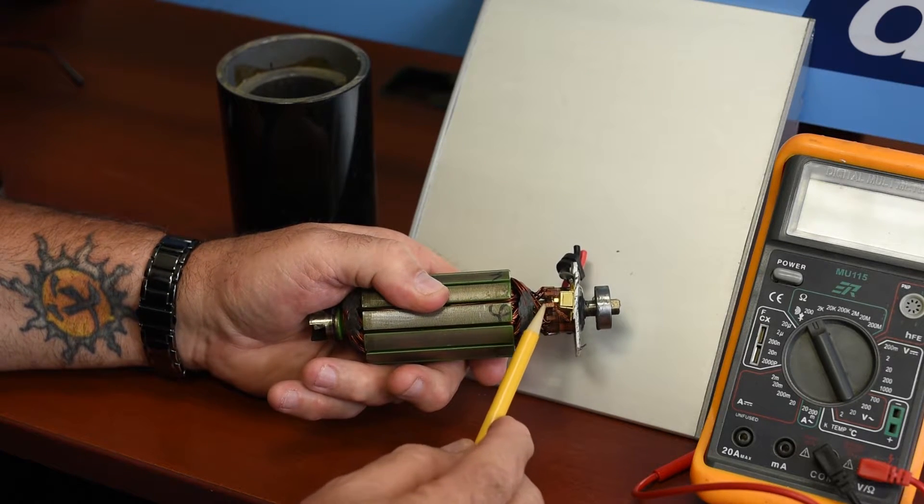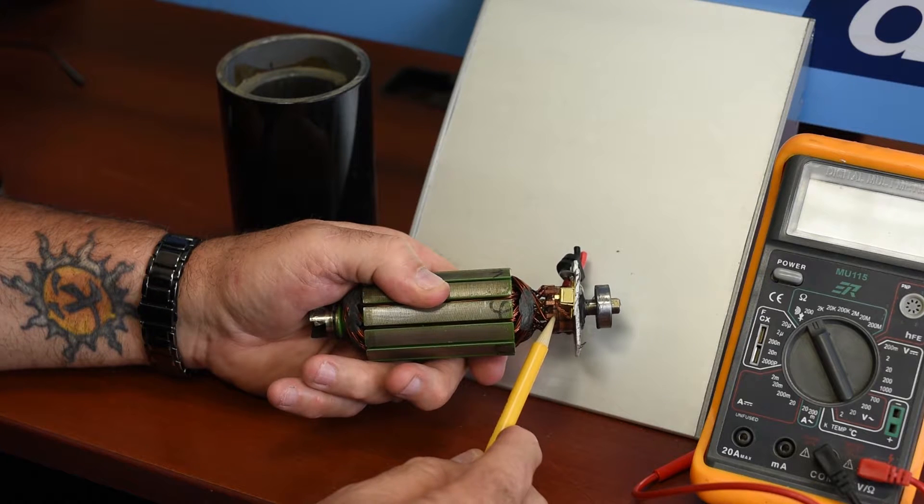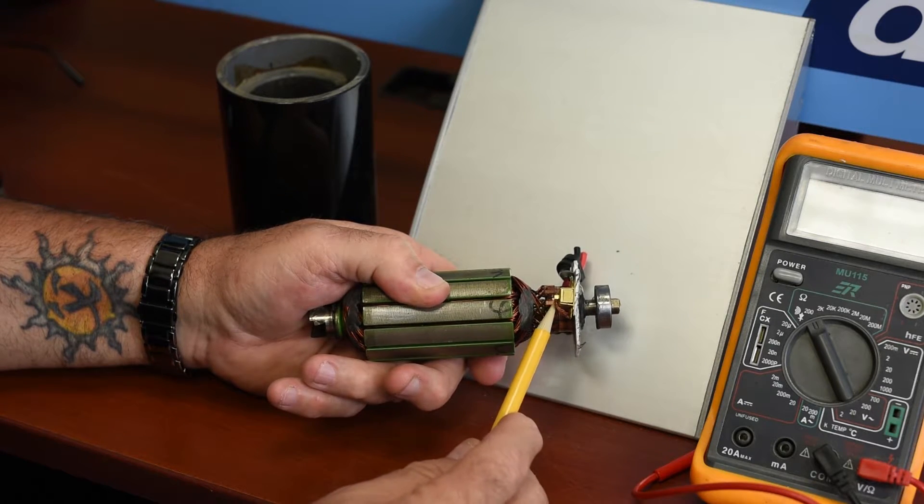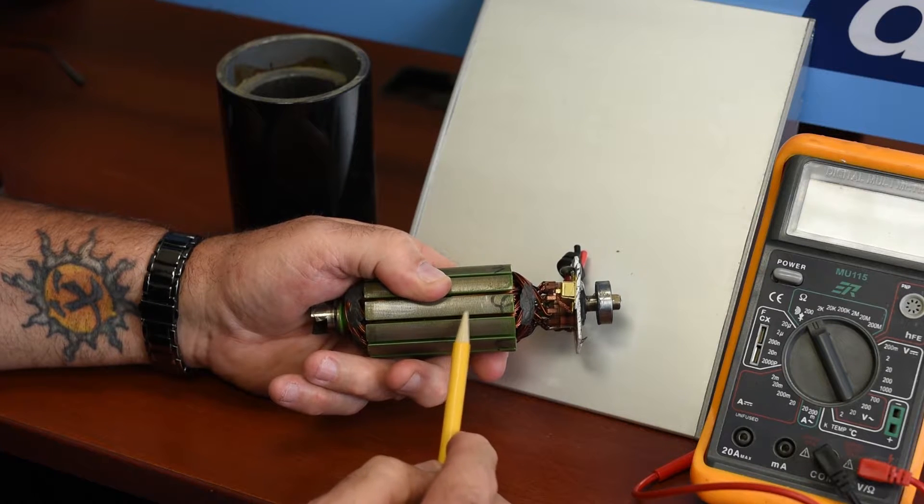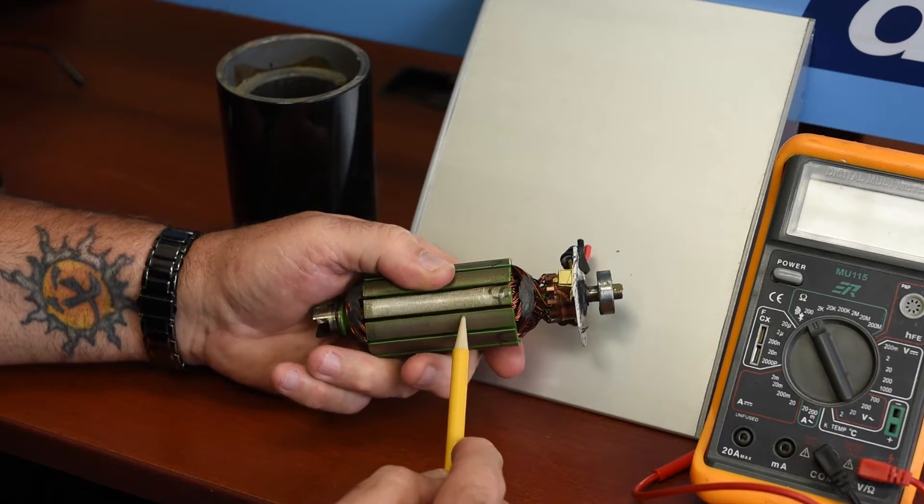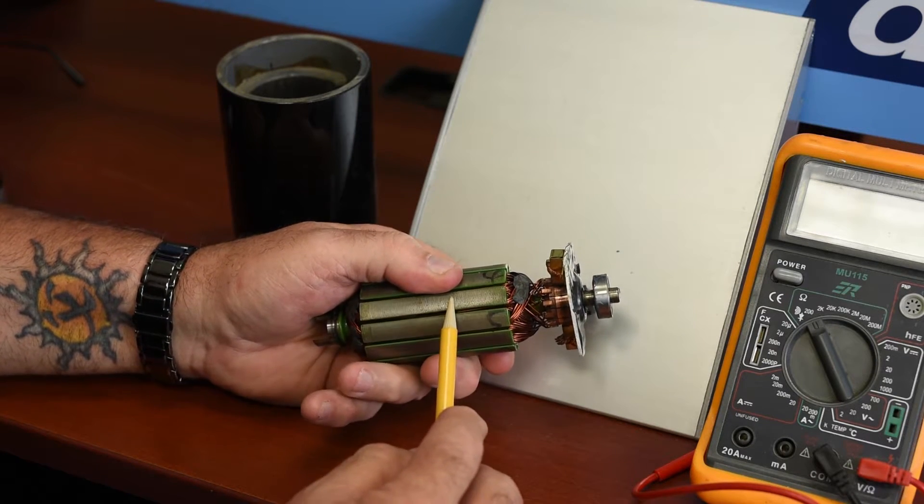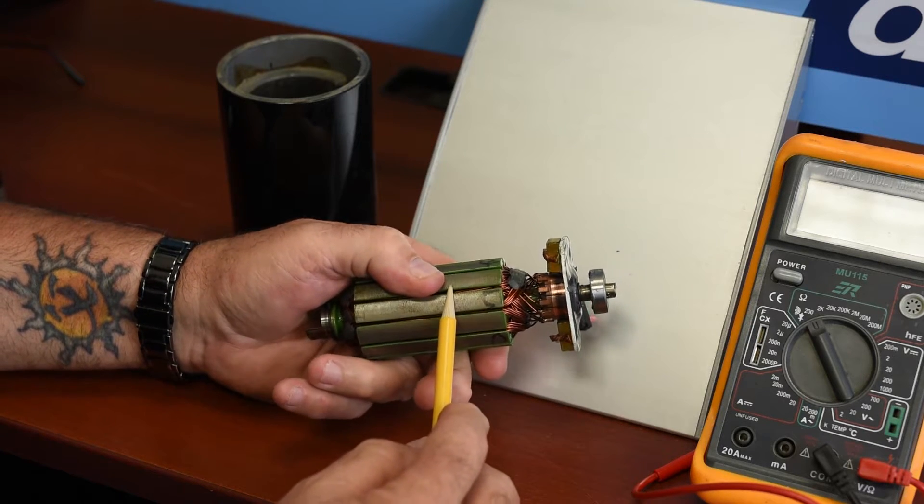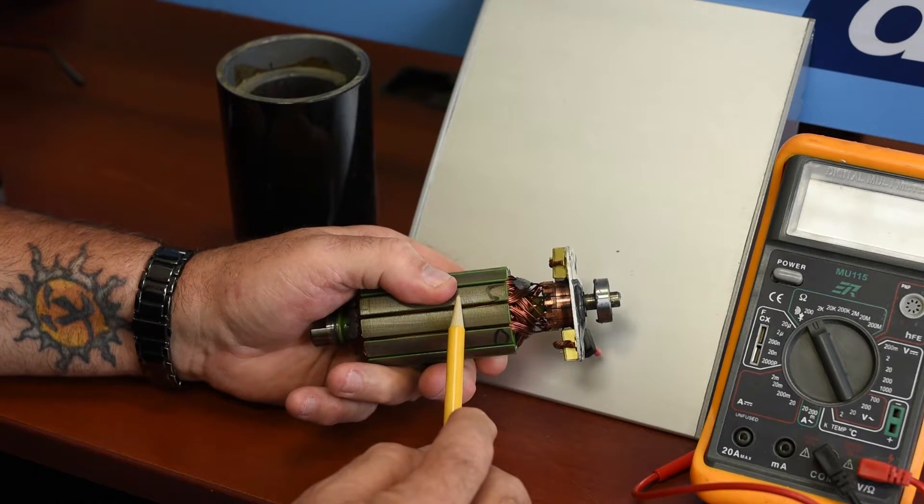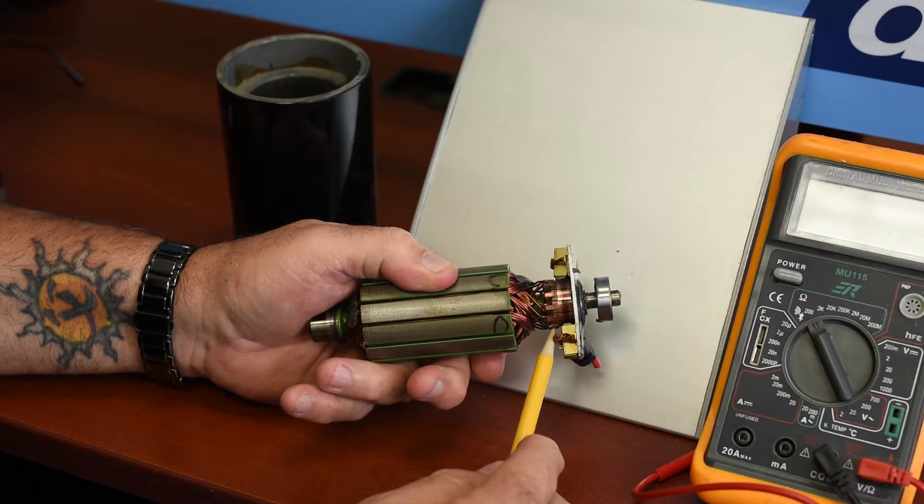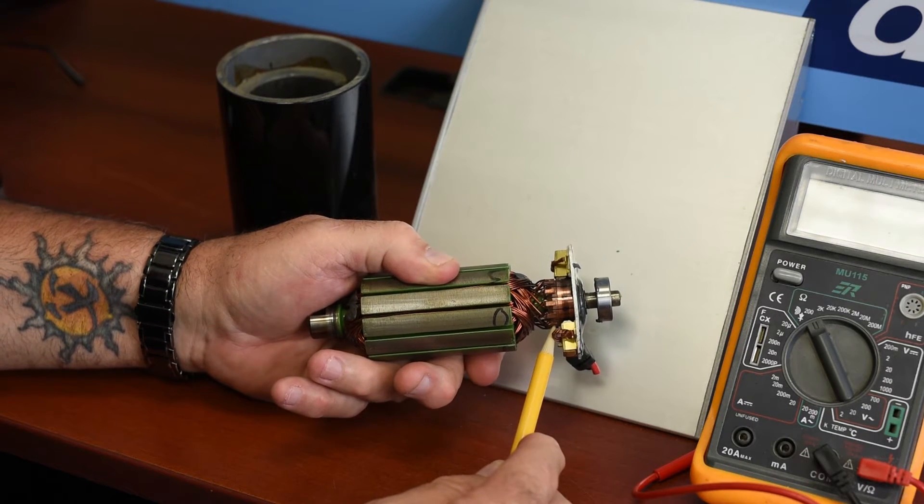And as the armature rotates, the next set of contacts is touched by the brushes, and the brushes energize the next core. And so forth and so on, where you'll get rotation of the motor, because as the motor rotates, the next set of contacts is always there to energize the next core.